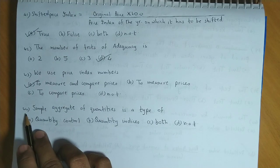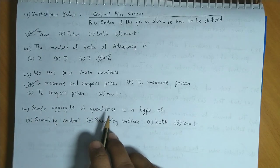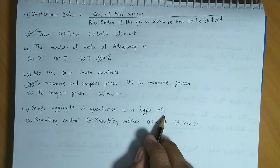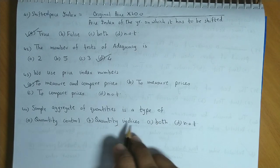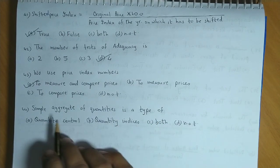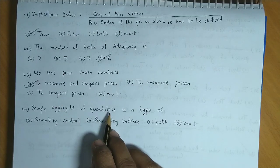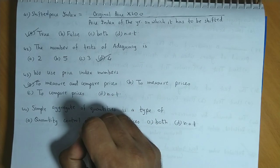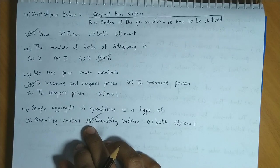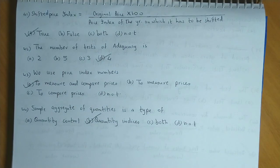Question number 44: Simple aggregate of quantities is a type of quantity control, quantity indices, both, ya none of these. Simple aggregate of quantities is a type of quantity index. So the answer is option B, quantity indices.